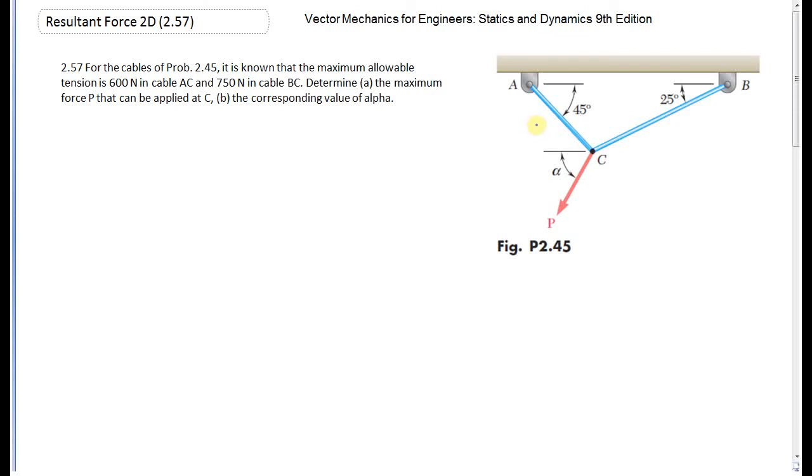I'm introducing another solution for problem 257. Here we have force AC 600 Newton and force BC 750 Newton. We're going to find P and corresponding alpha. In another solution I used the forces triangle; here I'm going to use the three vectors.